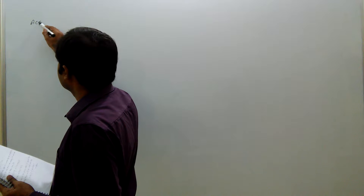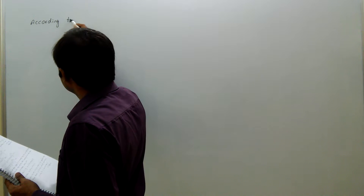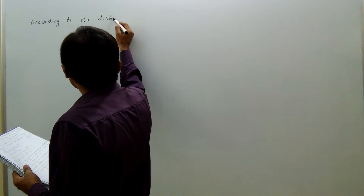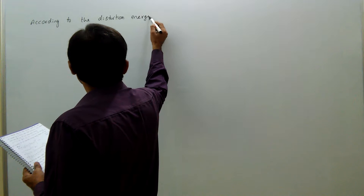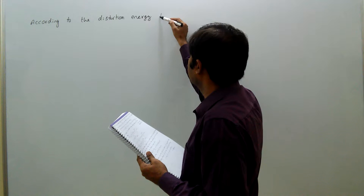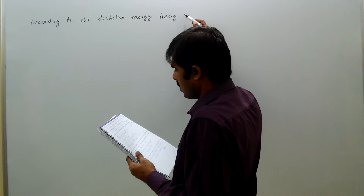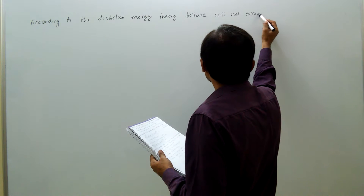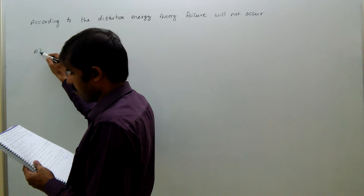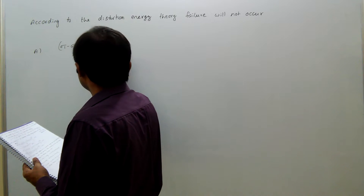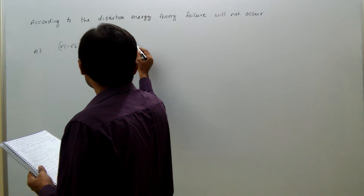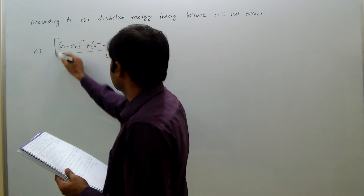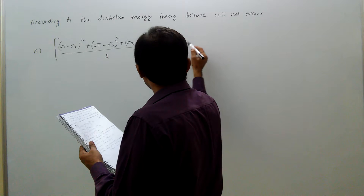According to the distortion energy theory, yielding will not occur as: (A) sigma 1 minus sigma 2 whole square plus sigma 2 minus sigma 3 whole square plus sigma 3 minus sigma 1 whole square, whole divided by 2, to the power of 1/2, less than or equal to sigma 0.